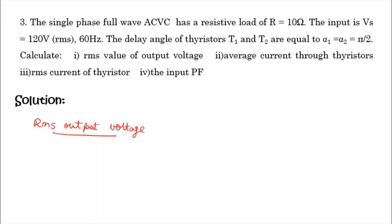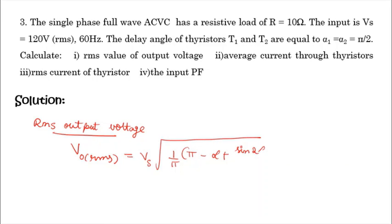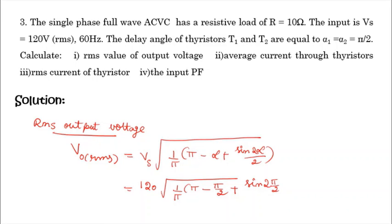First, calculate the RMS output voltage V0 RMS, given by Vs into root of (1 by pi) times (pi minus alpha plus sine 2 alpha by 2). Substituting Vs as 120 volts and alpha as pi by 2: 120 into root of (1 by pi) times (pi minus pi by 2 plus sine of 2 into pi by 2, divided by 2). You will get 84.85 volts.